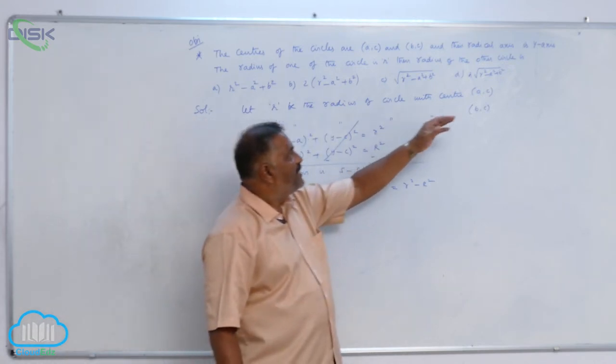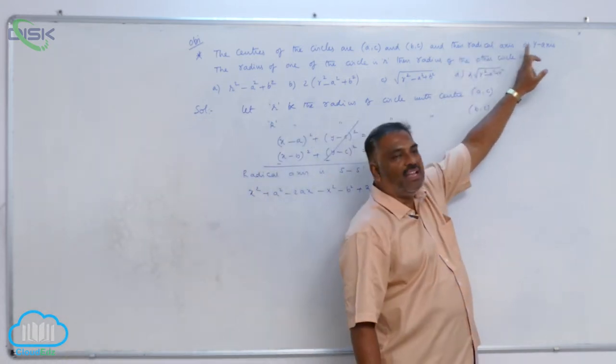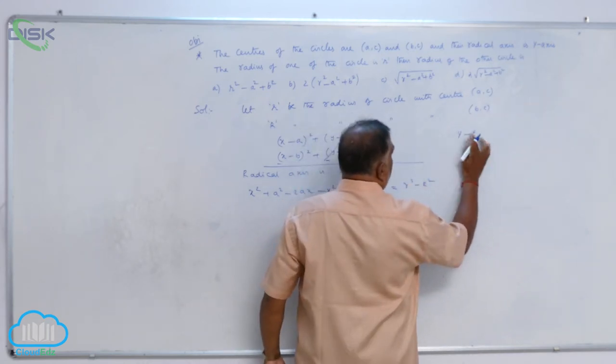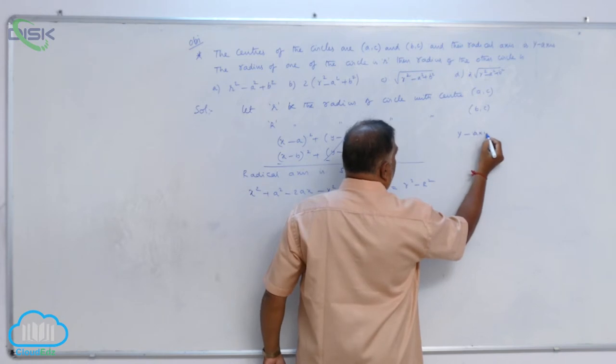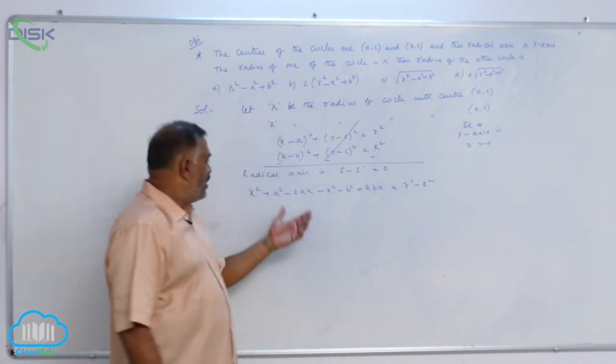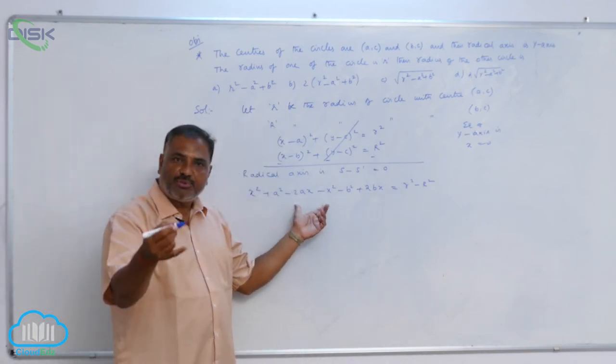According to the problem, he says that the radical axis is the y-axis. So, the equation of the y-axis is x = 0. So wherever x is there, substitute 0.